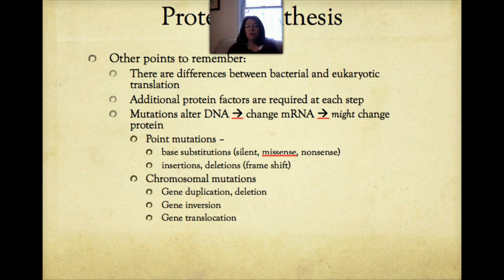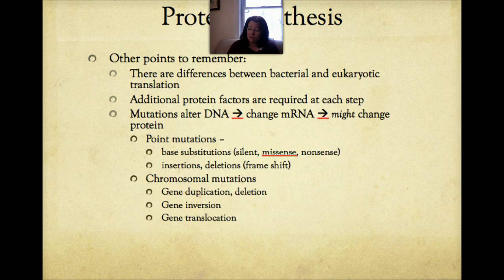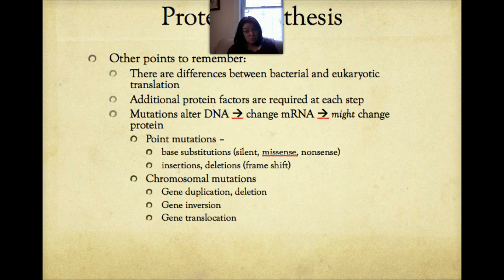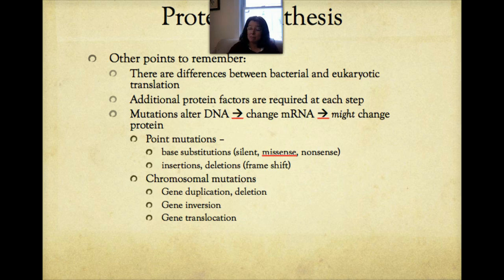Chromosomal mutations are more significant because entire segments of a chromosome are altered. These include inversions, where pieces break off, flip 180 degrees, and reinsert; translocations, where pieces of two chromosomes switch places; and gene duplication or deletion. Because we're talking about a chromosome-level mutation, many codons and many amino acids are affected, so chromosomal mutations tend to have a massive effect on the resulting protein.